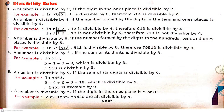Before starting the exercise, let us see some divisibility rules. First, a number is divisible by 2 if the digit in the ones place is divisible by 2. Second, a number is divisible by 4 if the number formed by the digits in the tens and ones place is divisible by 4.